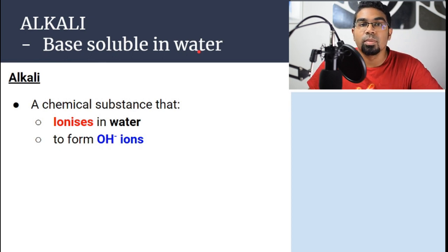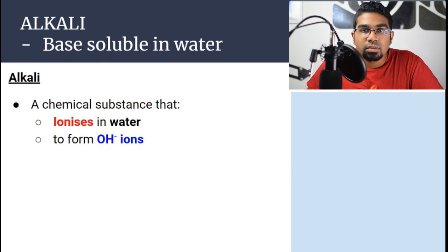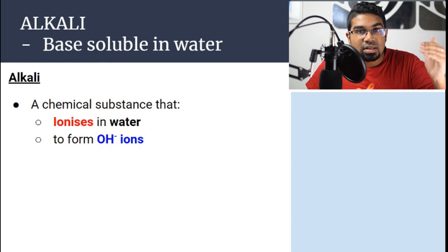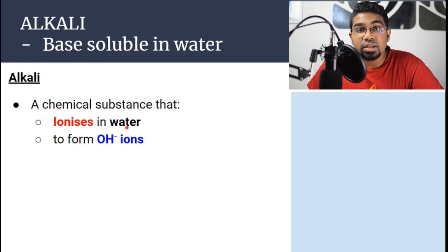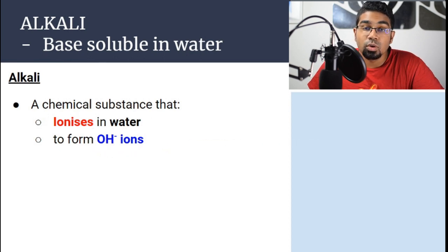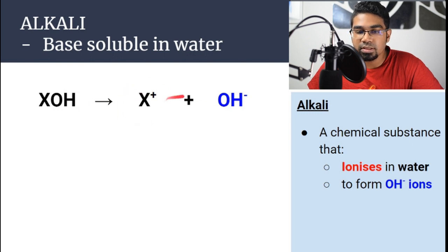Metal oxides are bases in the solid form. When we dissolve them in water, we get metal hydroxides, and metal hydroxides are alkalis — they are still bases, but now they are known as alkalis. An alkali is a chemical substance that ionizes in water, similar to acid, but instead of H+ ions, it forms OH⁻ ions. For example, XOH dissolved in water gives X+ and OH⁻ hydroxide ions.